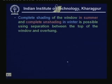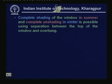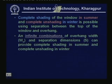Complete shading in summer and complete unshading in winter is possible using the separation between the top of the window and the overhang. An infinite number of combinations of overhang width W_naught and separation S can provide complete shading in summer and complete unshading in winter. The design must target the peak load instant since the sun position varies continuously.